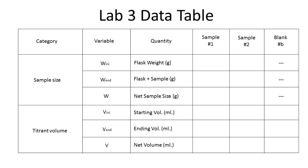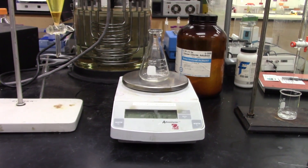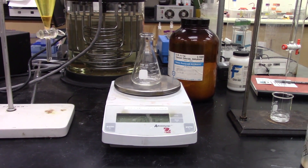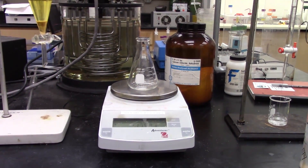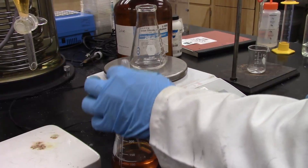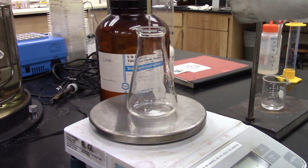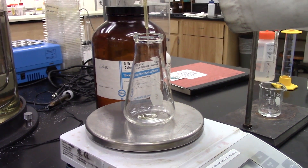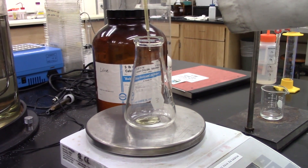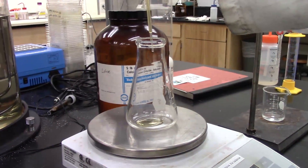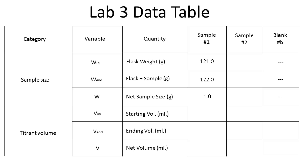If your instructor has not provided you with a raw data table, prepare a raw data table like the one shown here in your notebook. The first step is to weigh an empty flask and record the weight on the raw data table. Then weigh approximately one gram of oil sample to the nearest one-hundredth of a gram and transfer to the titration flask. Record the actual sample volume in the data table.